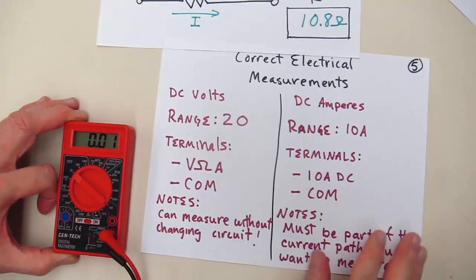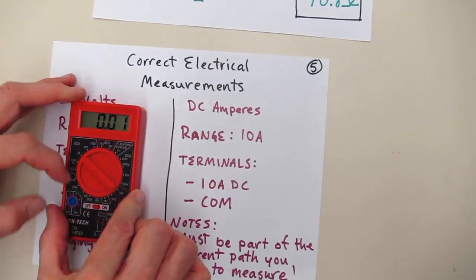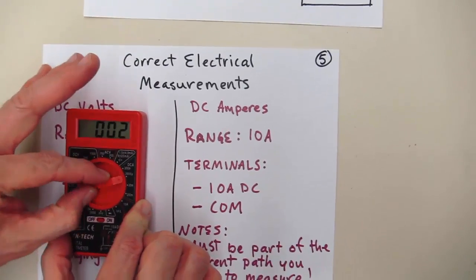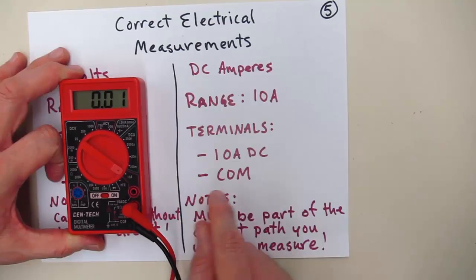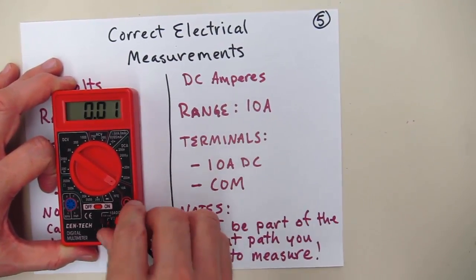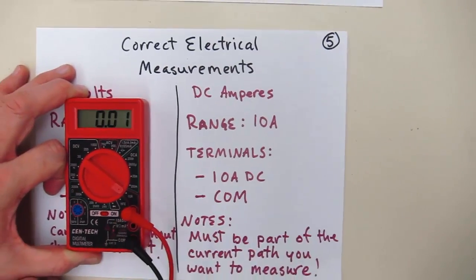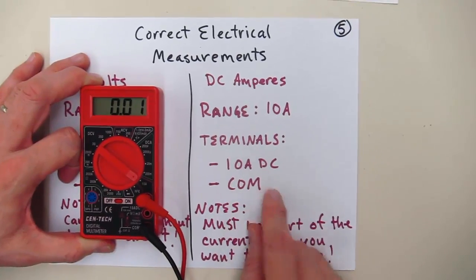The same is not true when you're measuring current. Again, current for us is going to be in DC amps, and we'll normally start with a 10-amp scale, and then also choose the correct terminals. When you're using the 10-amp scale, you want to be in the 10-amp probe and the common, 10-amp DC and the common.